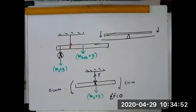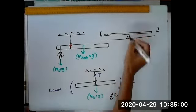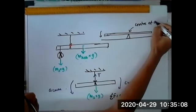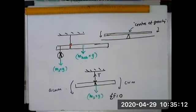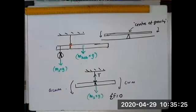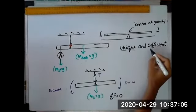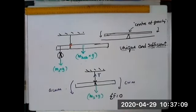How will you define this point? That point happens to be called the center of gravity. For a definition to be complete, it has to be unique — it has to describe only and exclusively the thing you're trying to describe. But at the same time it should also be sufficient, meaning it should describe it completely with no ambiguity left in the statement.